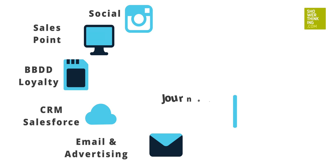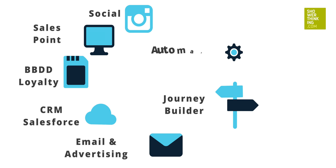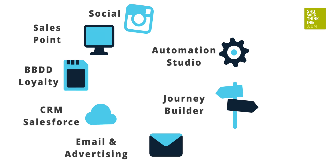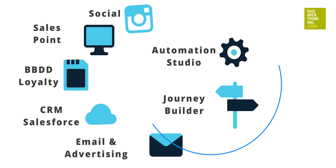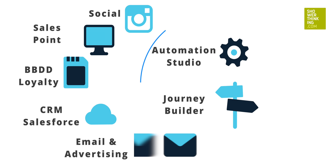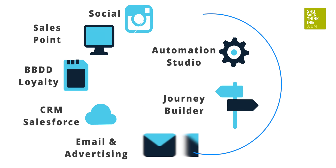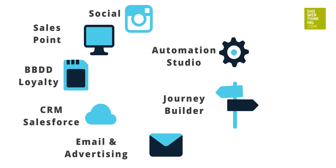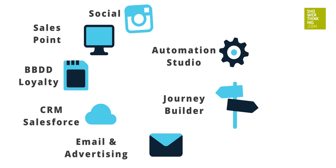The Journey Builder module works in tandem with Automation Studio. Automation Studio is a tool that helps us to segment customers and choose with whom we want to communicate. Suppose we want to get in touch with those customers who have not made a purchase in the last 90 days. In this case, Automation Studio would generate the lists of customers that we are going to impact in a communication flow in Journey Builder.